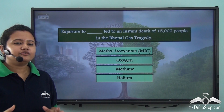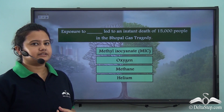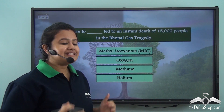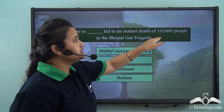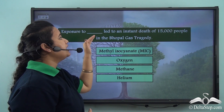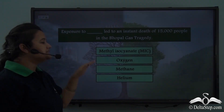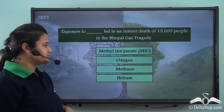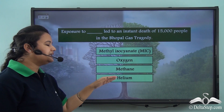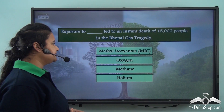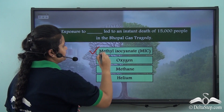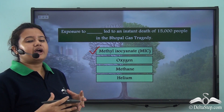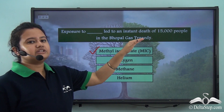Before proceeding further, let us answer this question: Exposure to which substance led to the instant death of approximately 15,000 people in the Bhopal gas tragedy — methyl isocyanide (MIC), oxygen, methane, or helium? The correct answer is methyl isocyanide. Exposure to MIC or methyl isocyanide led to the instant death of 15,000 people.